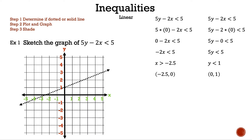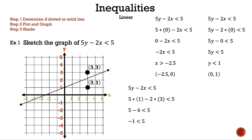Now that we've finished graphing our line, we need to decide if we shade above, below, both, or neither. So to figure out where we shade, we need to pick one point below the line and one point above the line. So we have the point (3, 1), which is below the line, and the point (3, 3), which is above the line. Now we need to rewrite the inequality so we can substitute each point in and figure out which one is true. Let's start with the point (3, 1). And now we have 5 times 1 minus 2 times 3 less than 5. 5 times 1 is 5, and 2 times 3 is 6, so now we have 5 minus 6 less than 5. And 5 minus 6 is negative 1, so now we have negative 1 less than 5. Is it true? It is true, so every point in that section makes the inequality true, which is what we want. To show that on the graph, we shade that section.